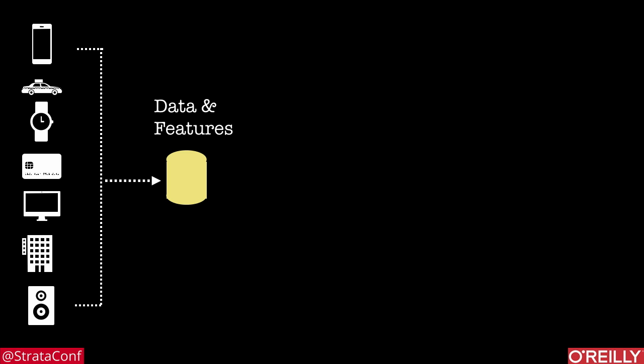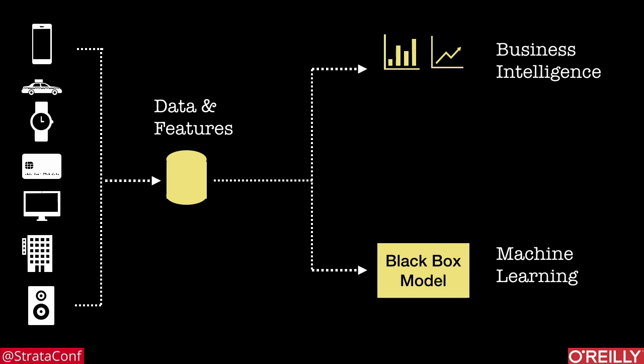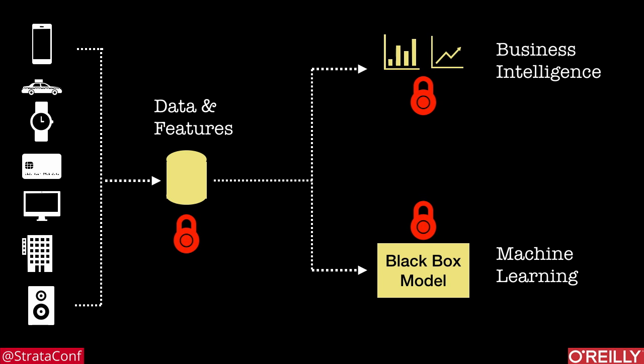But once we have data in place, we normally do two things with data. The first is improve our decision-making using BI. The second is to enable some form of automation using machine learning. We've long known that it's important to secure our data platforms and infrastructure. But what about our analytics?